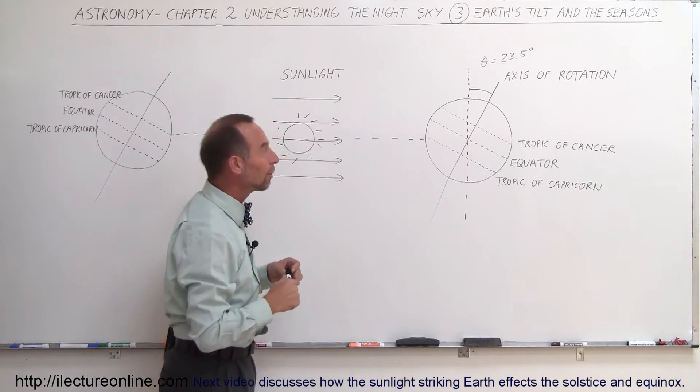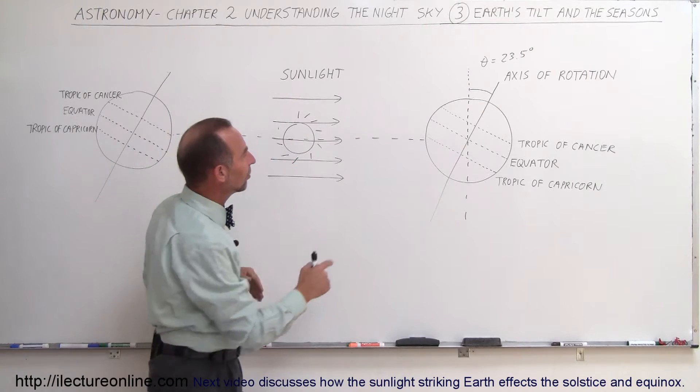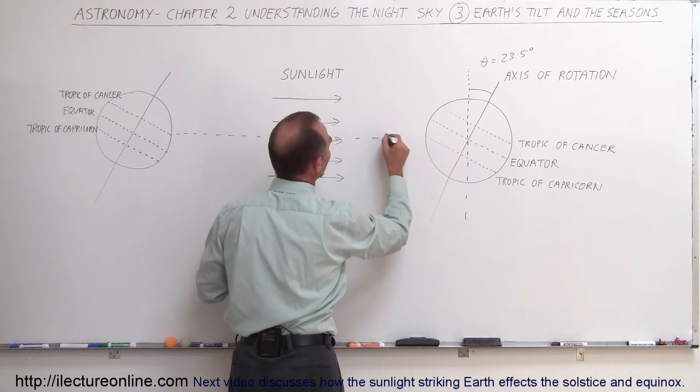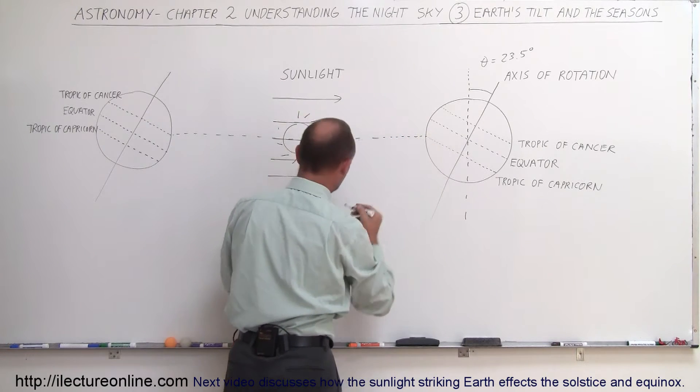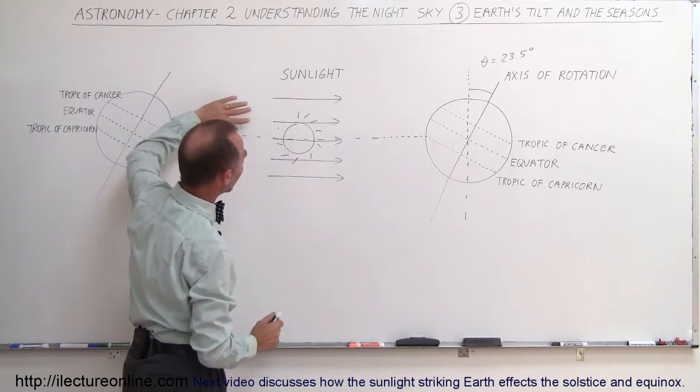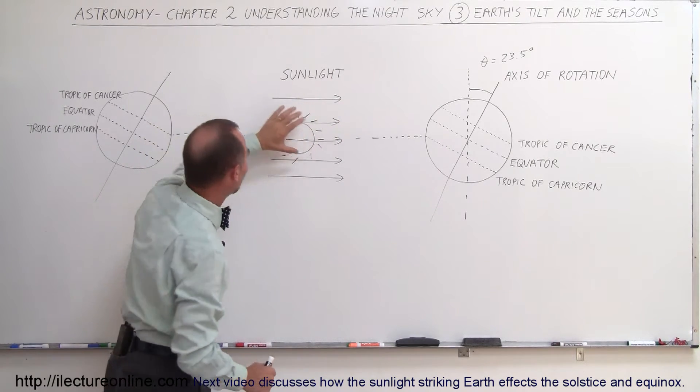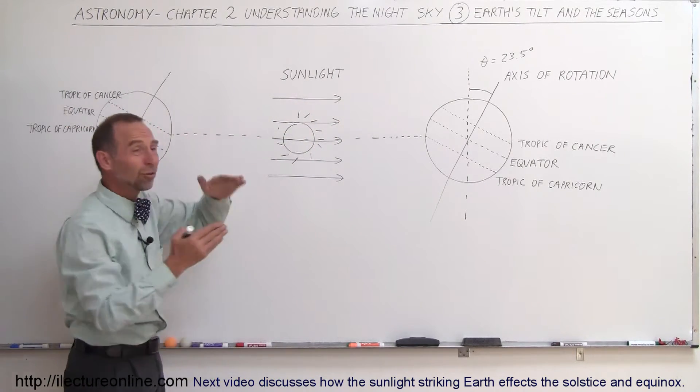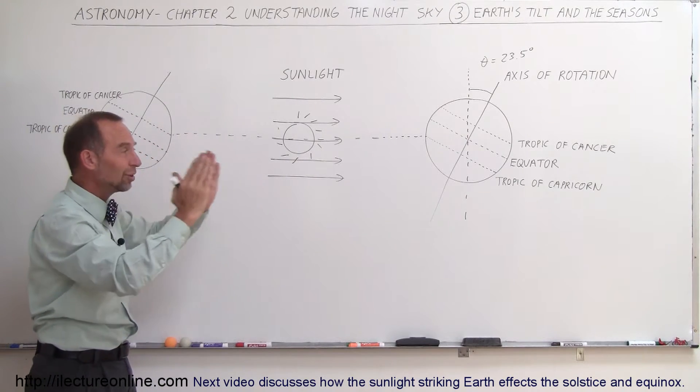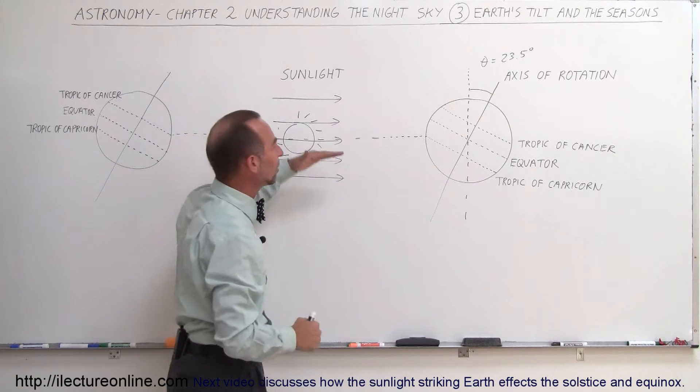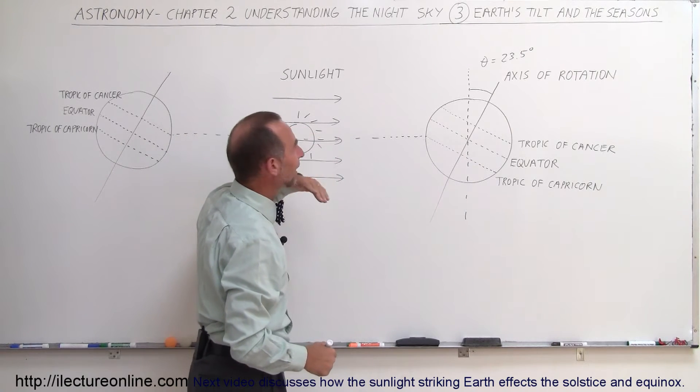And the reason why those are important is, let me try to match it a little bit better. If we take a look at the sunlight coming from the Sun, even though we drew the Sun like this, the Sun is 93 million miles away. It's much bigger than the Earth. When the sunlight reaches the Earth, all the sun rays are basically parallel to one another as they reach the Earth.